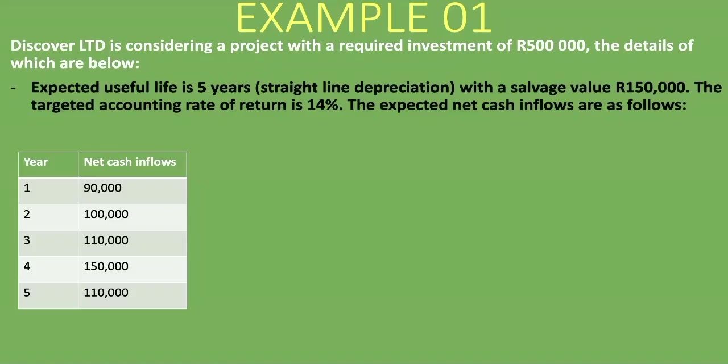In this example, Discovery Limited is considering a project with a required investment of R500,000. The expected useful life is five years, using straight-line depreciation with a salvage value of R150,000. The targeted accounting rate of return is 14%. The expected net cash inflows are given from year one through to year five, and all are positive — so these are net cash inflows.